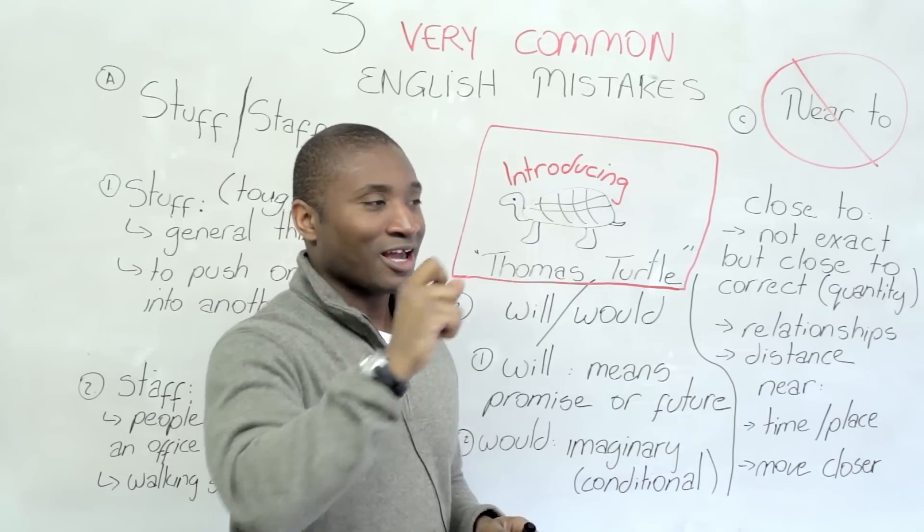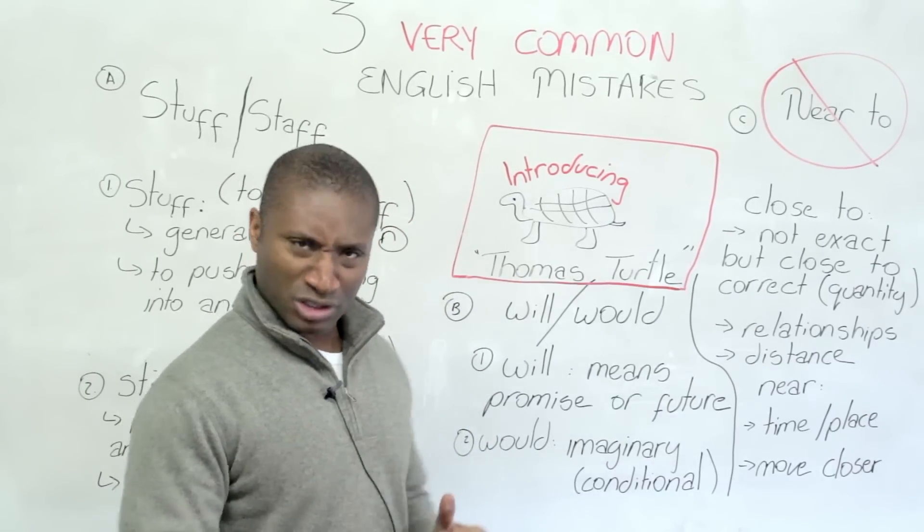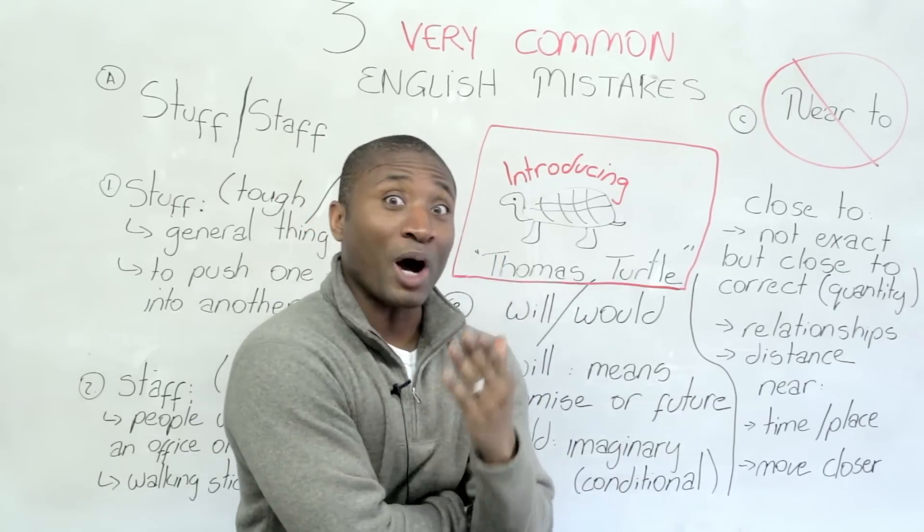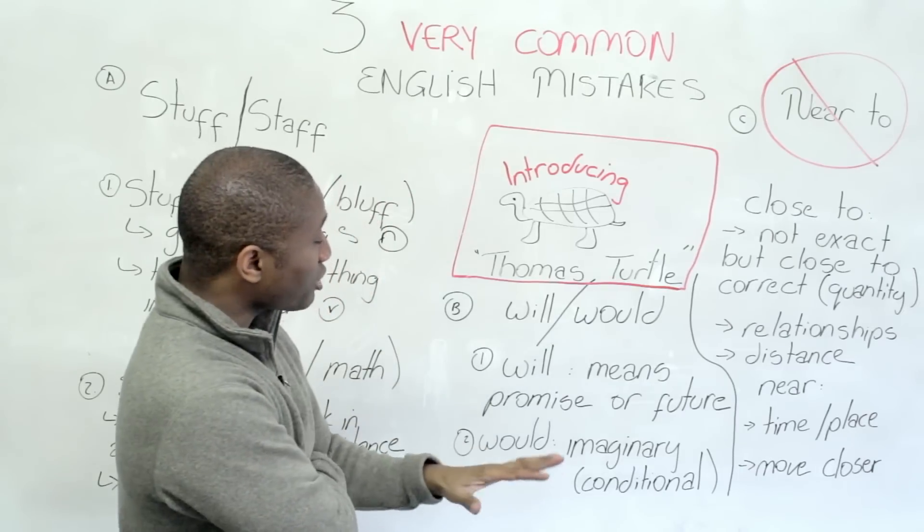Will, Thomas Turtle, will and would. Of course, you've done grammar, so you say, James, I know this already. Why are you telling me? It's not that you know it. It's the mistake you make with it. Generally, when students are thinking about something they know will not happen, but they wish it would. They wish it would.